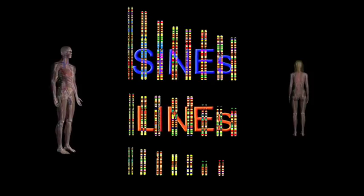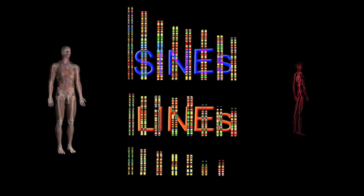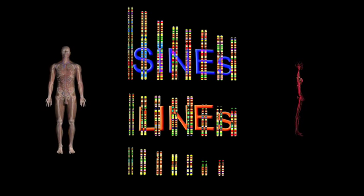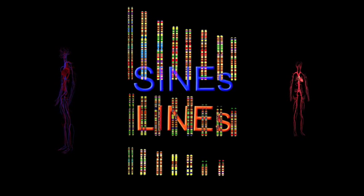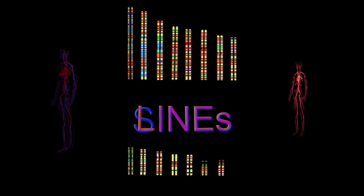There are about 850,000 LINEs and 1.5 million SINEs scattered throughout your genome, accounting for nearly 30% of the entire sequence.